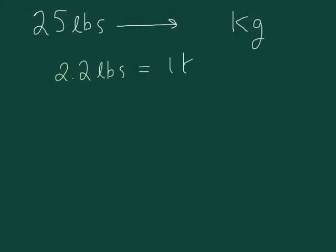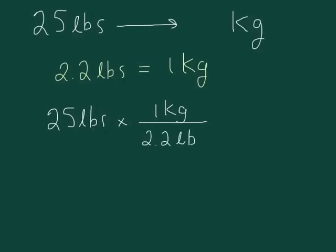So 2.2 pounds is equal to 1 kilogram. 25 pounds, we want to convert it into kilograms, so essentially what we're doing is multiplying it by a ratio of 1 kilogram for every 2.2 pounds. Now that ratio of 1 kilogram over 2.2 pounds is actually just the number one, so we haven't changed the question at all.